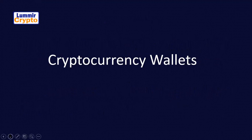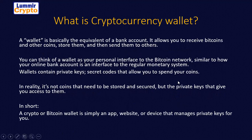Now we'll be looking at crypto wallets. A wallet is basically the equivalent of a bank account. It allows you to receive Bitcoin and other coins, store them, and send them to others. Your cryptocurrency wallet — your digital asset wallet — is equivalent to your bank account. The only difference is that this one is completely digital, and its account number is just a series of code — a wallet address.